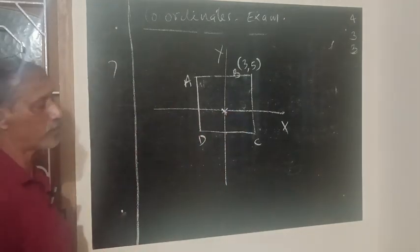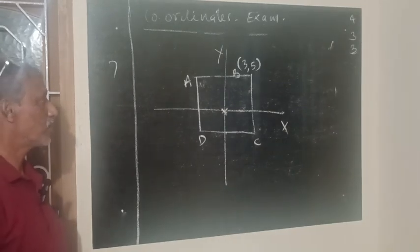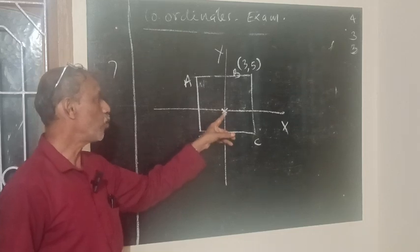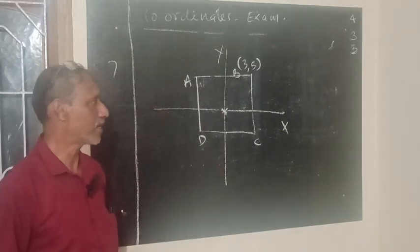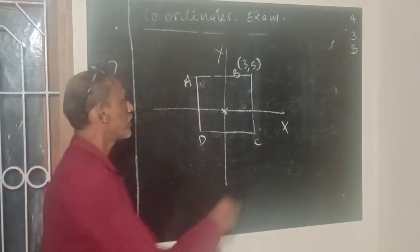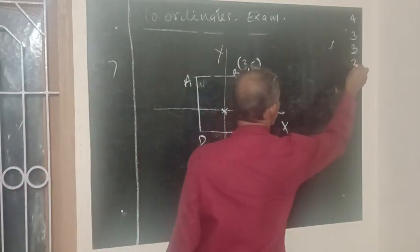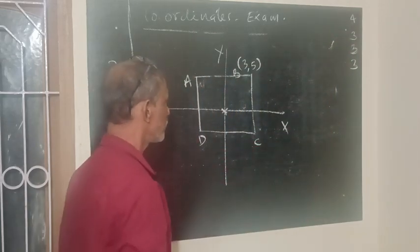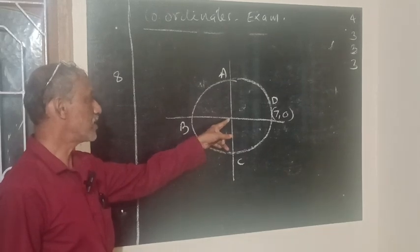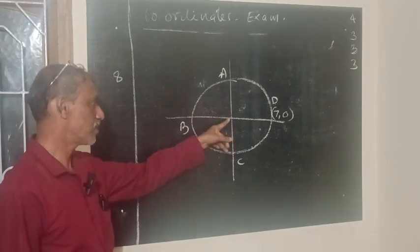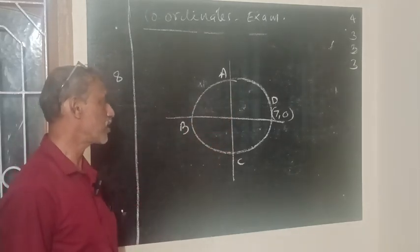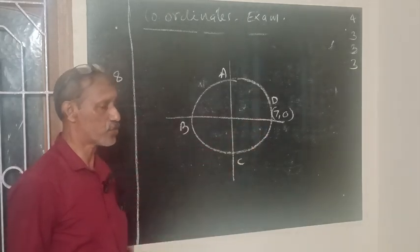The origin is the center of the square. A, B, C, D is a square and origin is the center of the square. Find the coordinates of the points A, C, and D. If this is the center of the circle, find the coordinates of A, B, and C. If the point D is (7, 0).